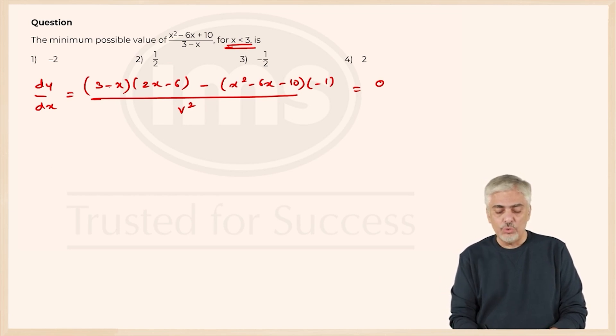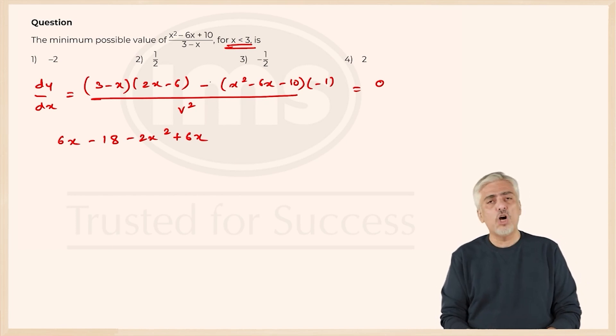So 3 minus x into 2 minus 2x minus 6, so 3 into 2x will be 6x, 3 into minus 6 will be minus 18, minus x into 2x will be negative 2x² minus x into minus 6 will be plus 6x. Yes I know I could have used 2 common taken x minus 3 the whole square all that but that is okay, not really needed.